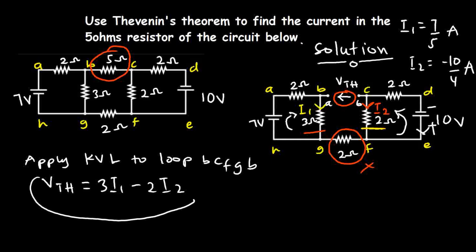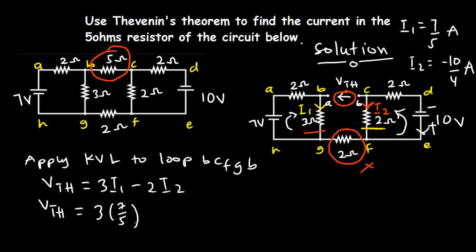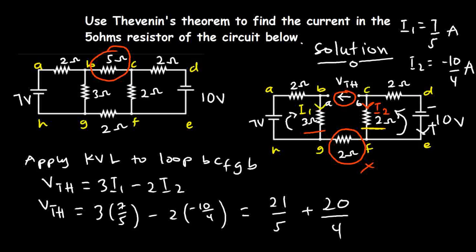Substituting the known values: VTH equals 3 times (7/5) minus 2 times (minus 10/4), which gives 21/5 plus 20/4. Simplifying 20/4 to 5, we have 21/5 plus 5, which equals 46/5. So VTH equals 46/5 volts.